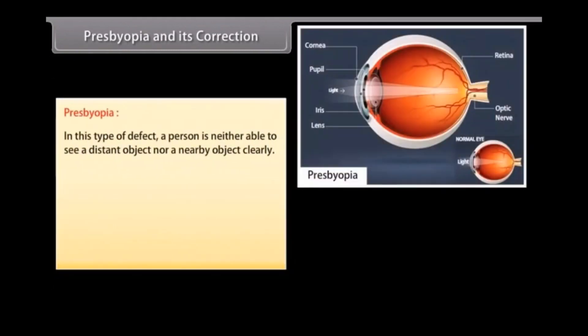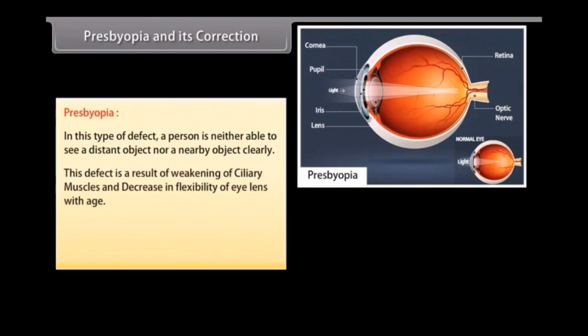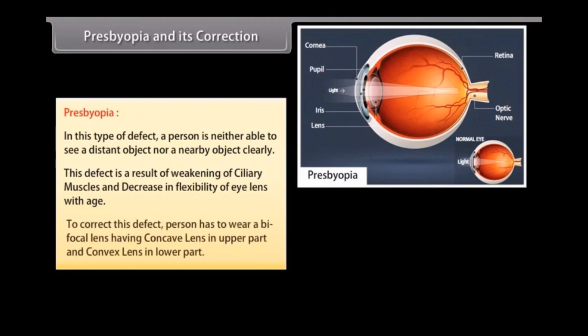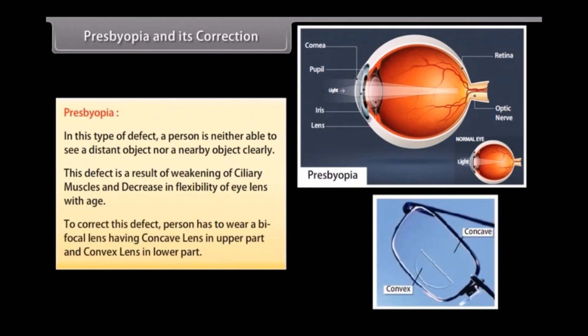In presbyopia, a person is neither able to see distant objects nor nearby objects clearly. This defect results from the weakening of ciliary muscles and decreasing flexibility of the eye lens with age. The person has to wear bifocal lenses having a concave lens in the upper part and a convex lens in the lower part.